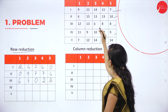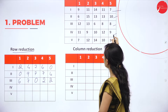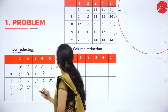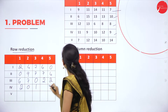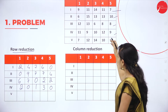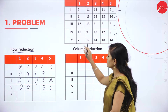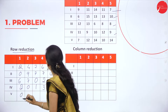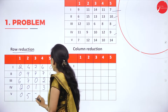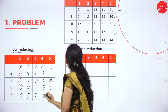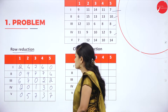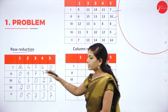In the fourth row the least value is 9. So 11 minus 9 is 2, 9 minus 9 is 0, 10 minus 9 is 1, 12 minus 9 is 3, 9 minus 9 is 0. In the last row the least value is 7. So 7 minus 7 is 0, 12 minus 7 is 5, 14 minus 7 is 7, 10 minus 7 is 3, and 14 minus 7 is 7. Row reduction is now finished.